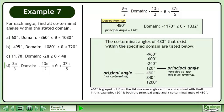The coterminal angles of 480 degrees that exist within the specified domain are listed below. 480 degrees is grayed out from the list since an angle can't be coterminal with itself. In this example, 120 degrees is both the principal angle and a coterminal angle of 480 degrees.